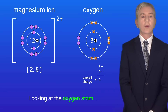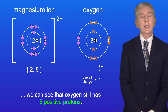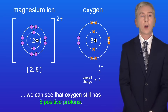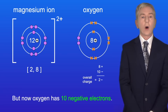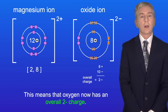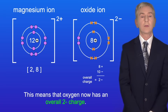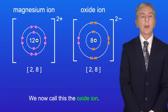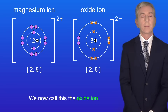Looking at the oxygen atom, we can see that oxygen still has 8 positive protons but now oxygen has 10 negative electrons. This means that oxygen now has an overall 2 negative charge and we now call this the oxide ion.